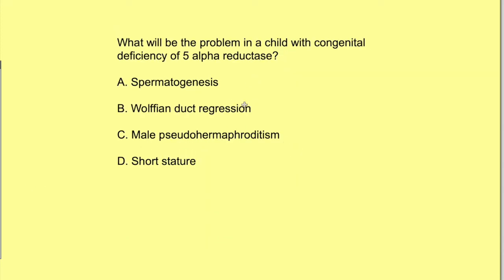Before closing, let's answer a question: what will be the problem in a child with congenital deficiency of 5-alpha reductase? The options are: a problem in spermatogenesis, Wolffian duct regression, male pseudo-hermaphroditism, or short stature. The answer is C — male pseudo-hermaphroditism.